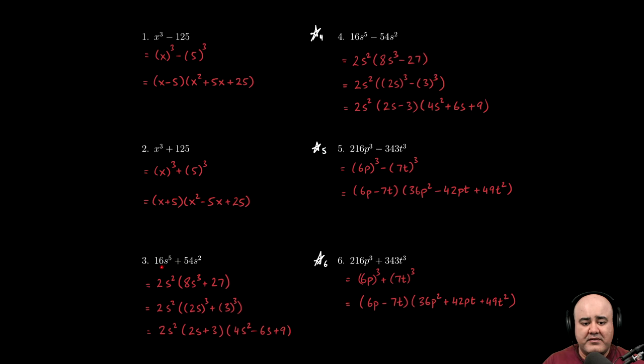So 16 divided by 2 gives us 8, s to the fifth divided by s squared gives us s to the third. 54 divided by 2 will give us plus 27, and then s squared divided by s squared, there's just one that divides out.